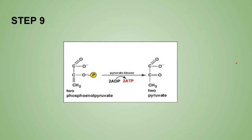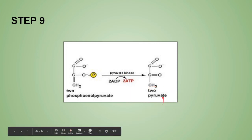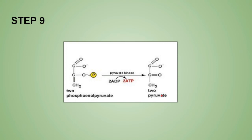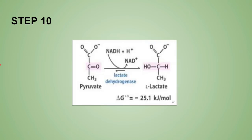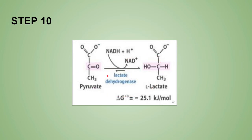Step 9 is the ATP production phase and is irreversible. PEP, acted on by pyruvate kinase, forms two ATPs and two molecules of pyruvic acid — this is the second substrate-level phosphorylation. Step 10 is the anaerobic step: pyruvic acid is reduced to lactic acid by lactate dehydrogenase (LDH). LDH exists as five isoenzymes, and its cardiac isoenzyme is elevated in myocardial infarction.